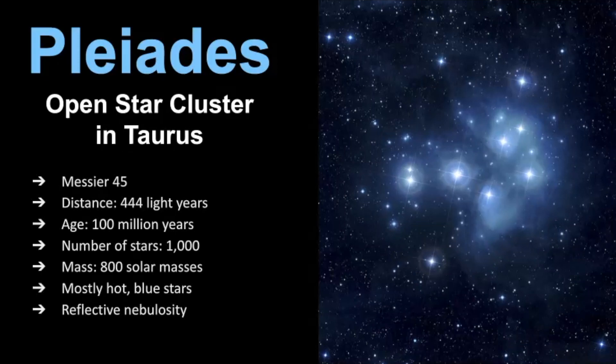Its age is estimated to be 100 million years old and it's also estimated to have over a thousand stars. In terms of its mass, it's estimated to be 800 solar masses and it's mostly made up of hot blue stars and you can see there's some nebulosity here throughout this star cluster and that's a little different than the Hyades.